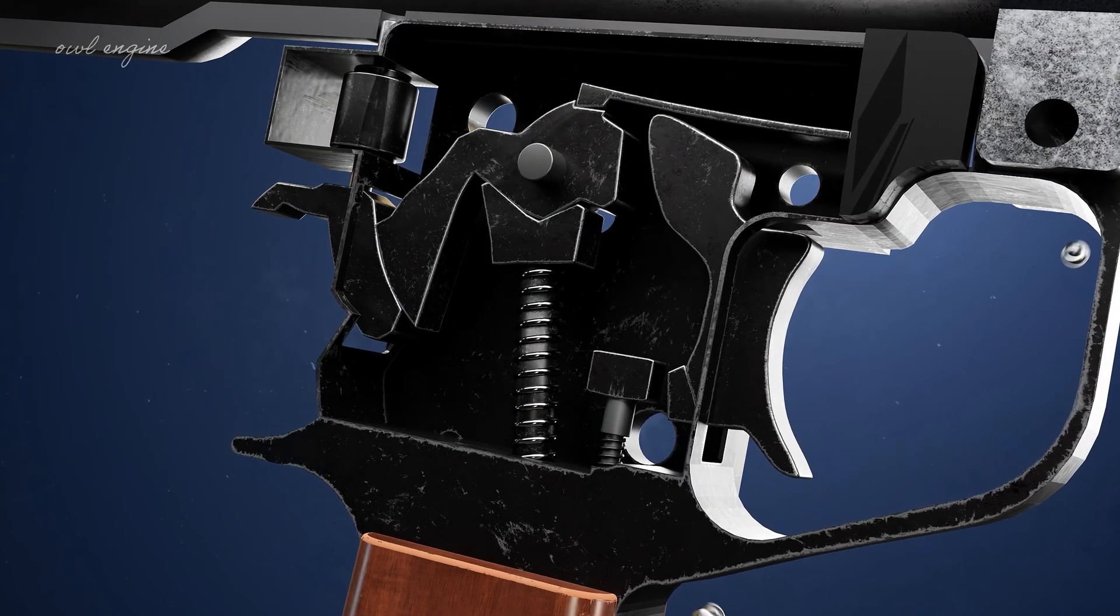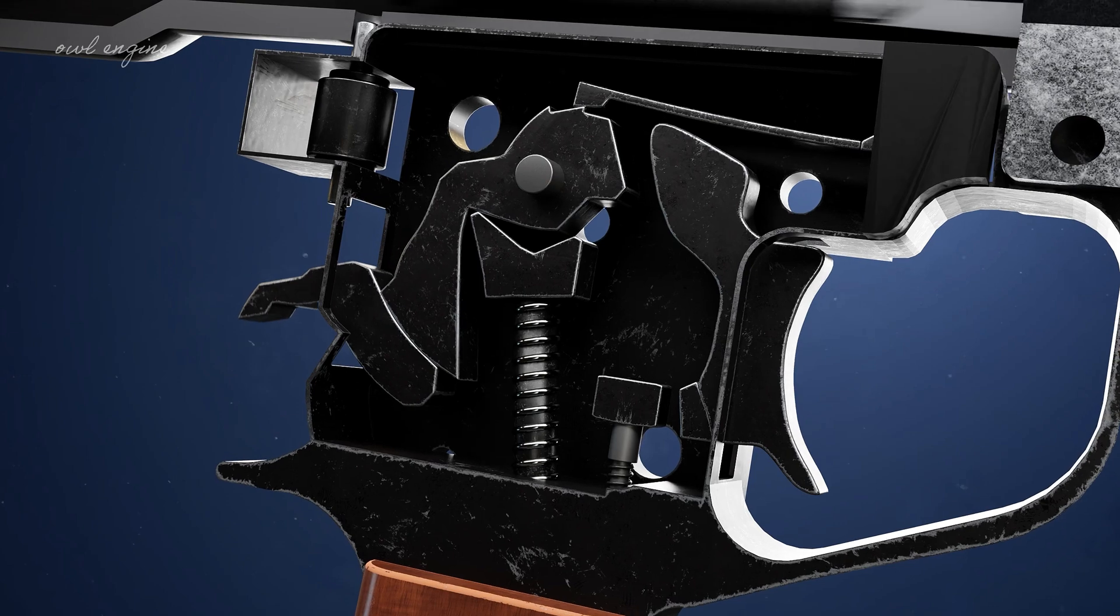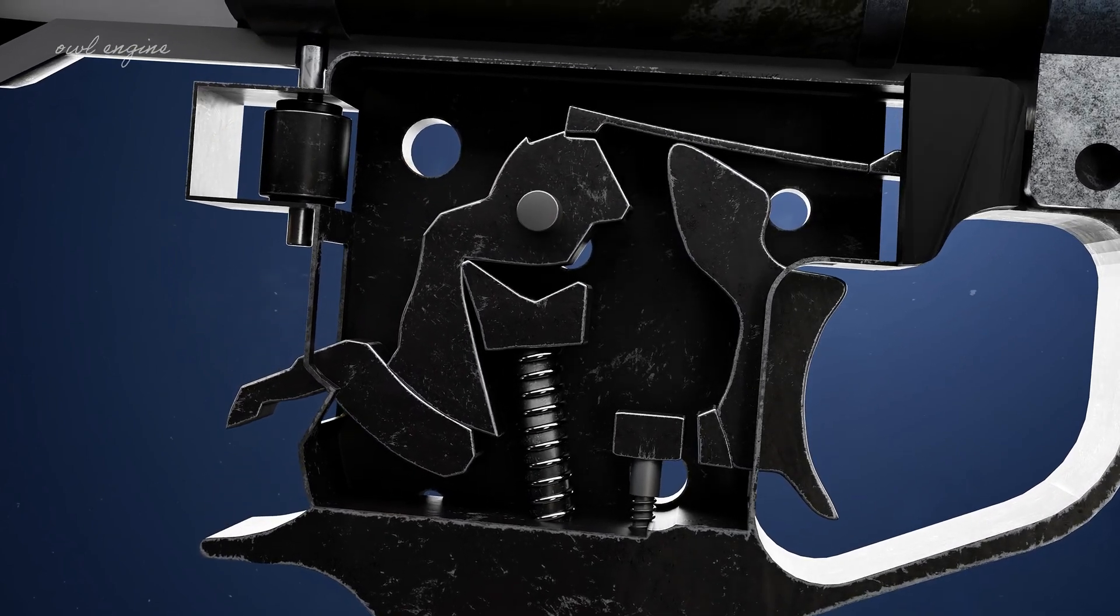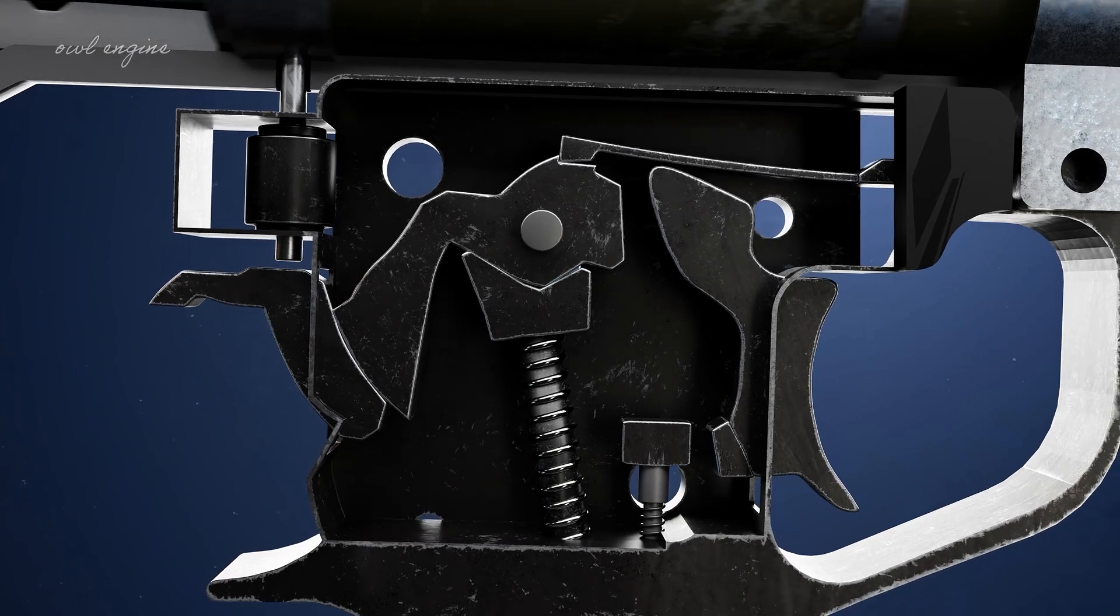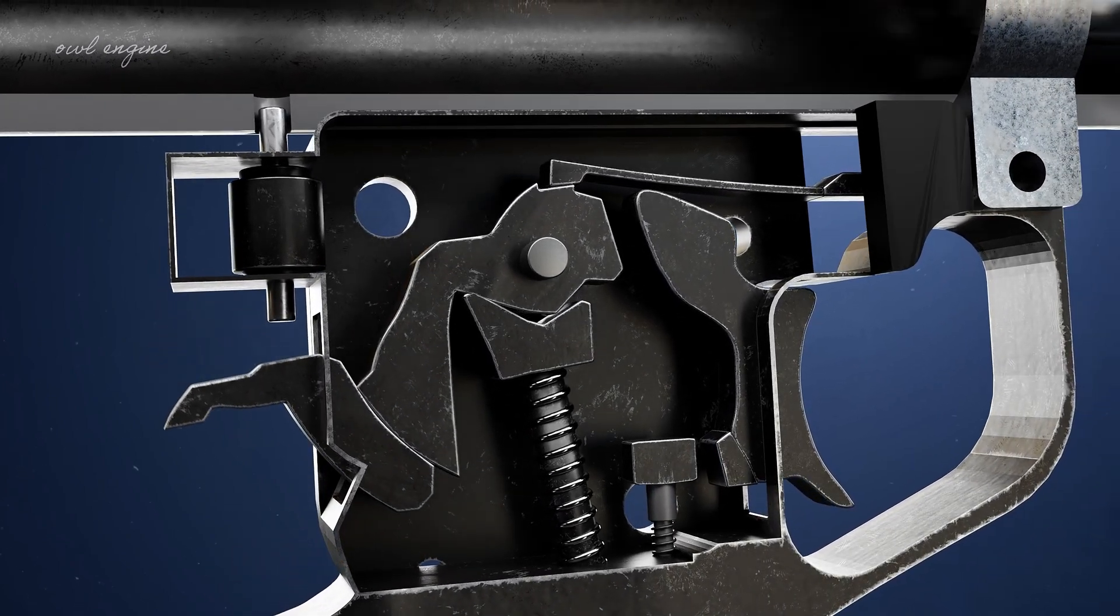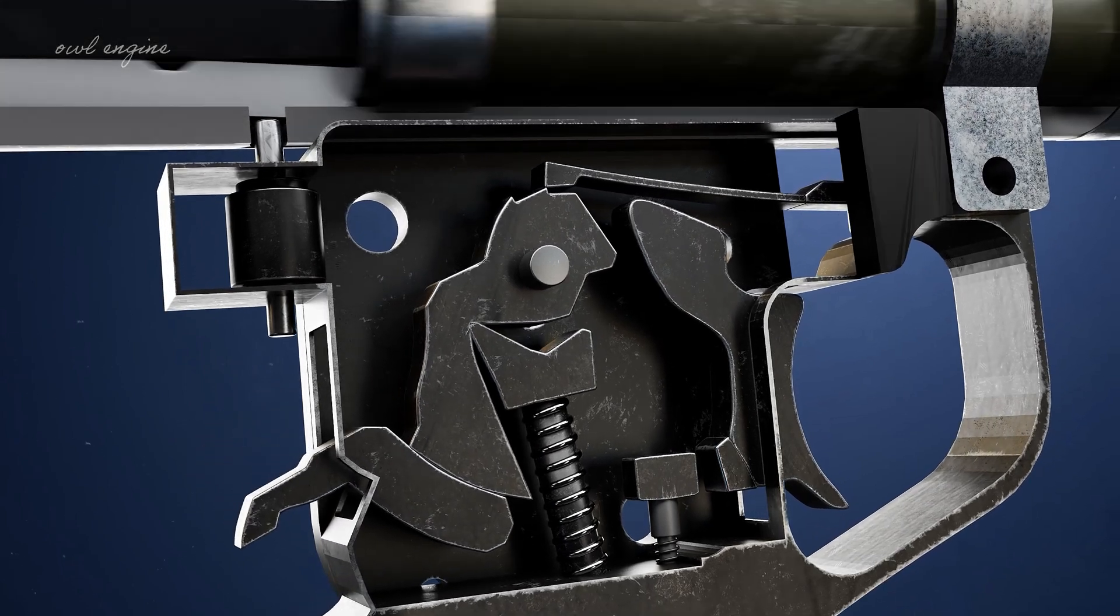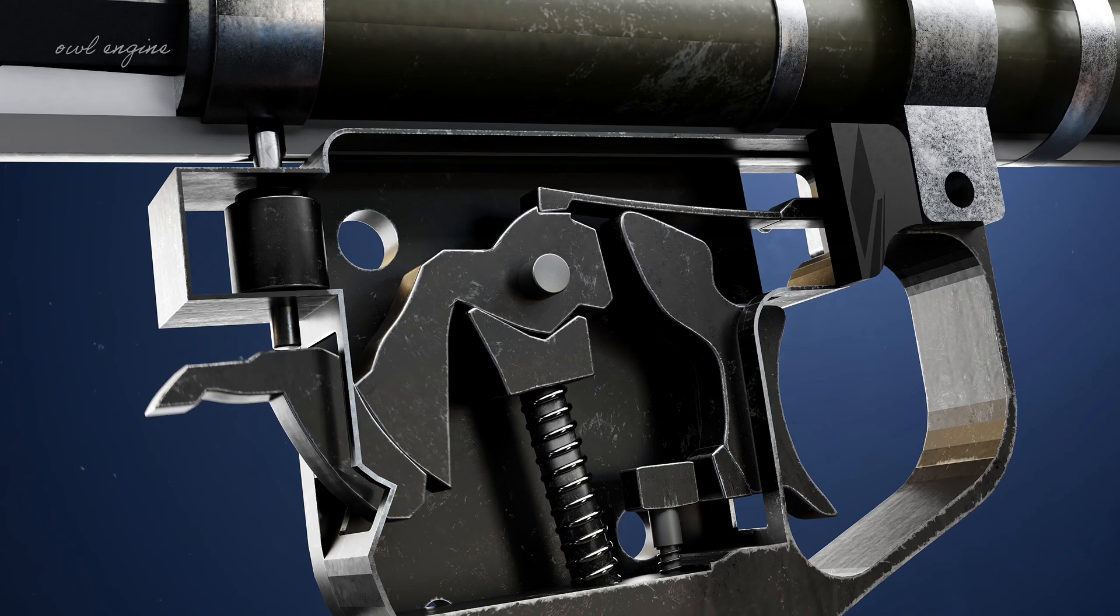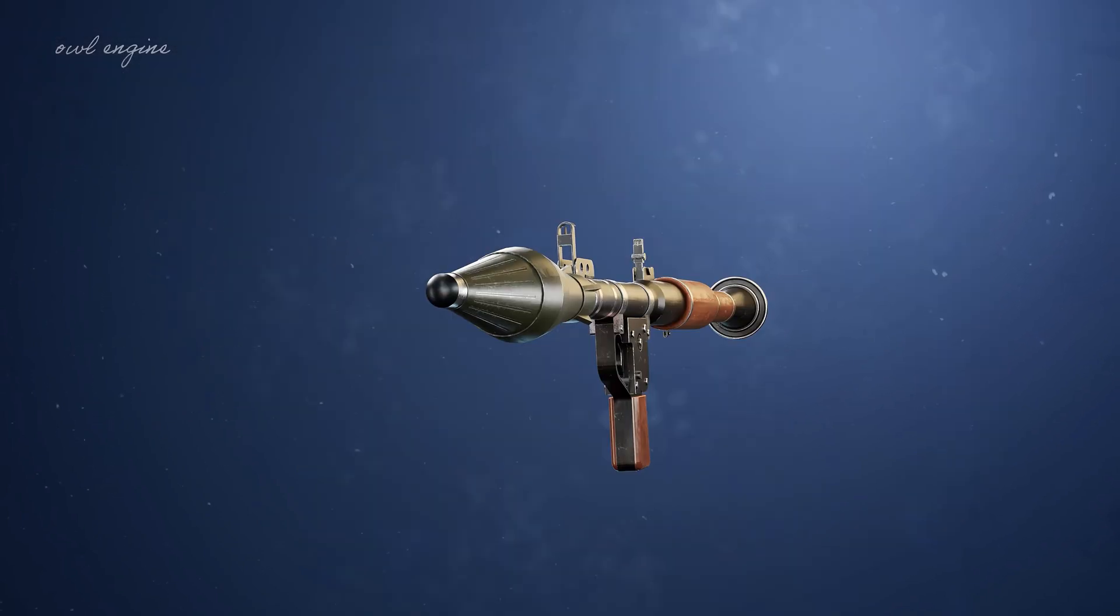Let's look at the trigger mechanism. When the shooter is ready to fire, they apply pressure to the trigger. The trigger mechanism releases the firing pin, which strikes the primer of the rocket projectile inside the launcher tube. The impact causes a spark, igniting the propellant in the rocket motor. This rapid combustion produces high-pressure gases, propelling the rocket out of the launcher tube.